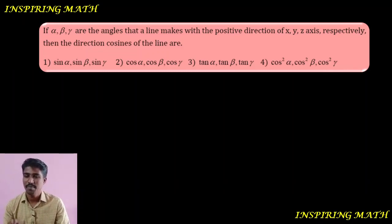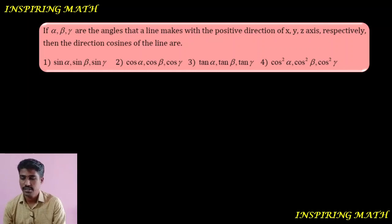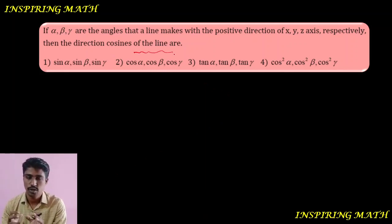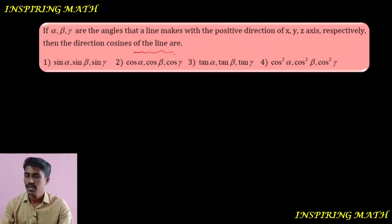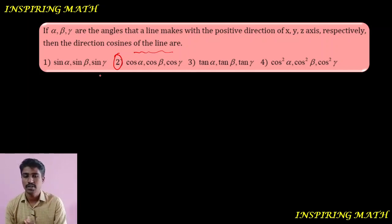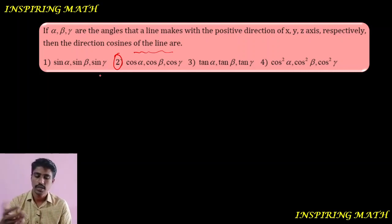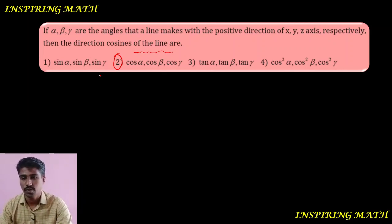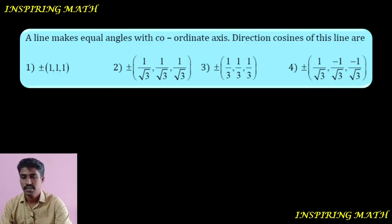If alpha, beta, gamma are the angles that a line makes with the positive direction of x, y, z axes respectively, then the direction cosines of the line are cos α, cos β, cos γ. This is a conceptual-based question — you can directly mark the correct option from the definition.